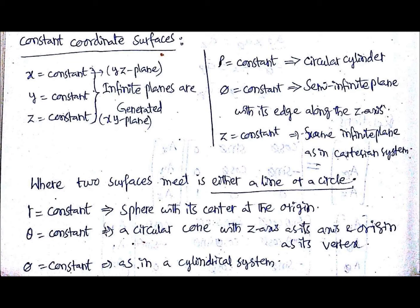In cylindrical coordinates, if ρ equals a constant it will be a circular cylinder. If φ equals a constant, that will be a semi-infinite plane with its edge along the z-axis. For Cartesian it is easy, but it is more difficult for the cylindrical coordinate system. If z is constant, it is the same infinite plane as in the Cartesian system.